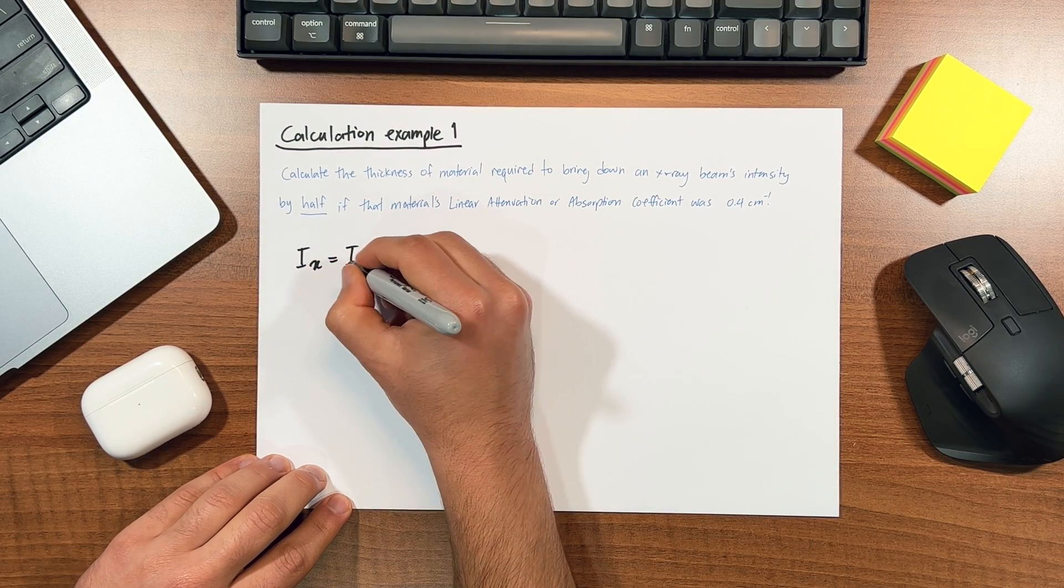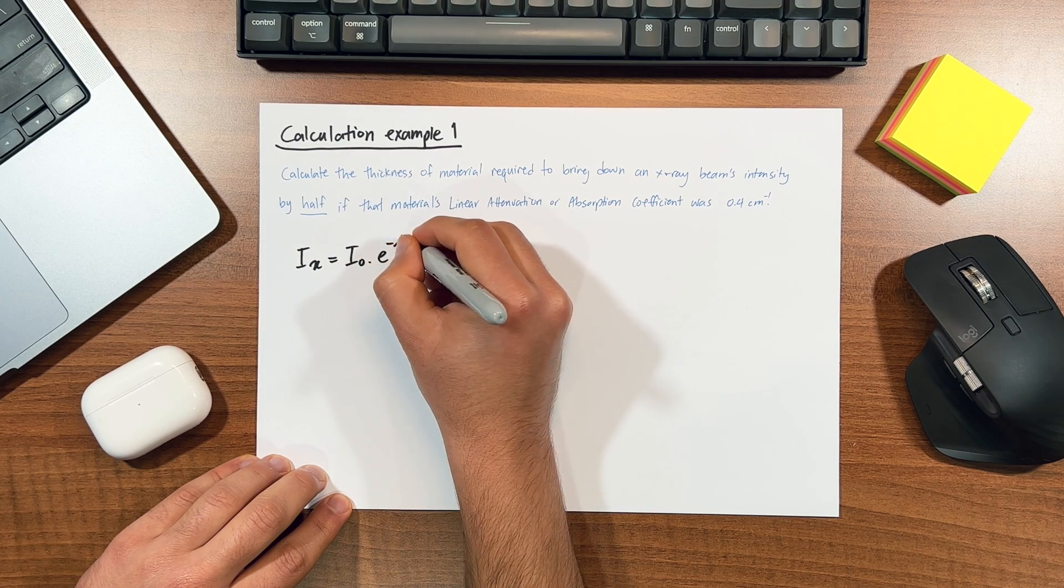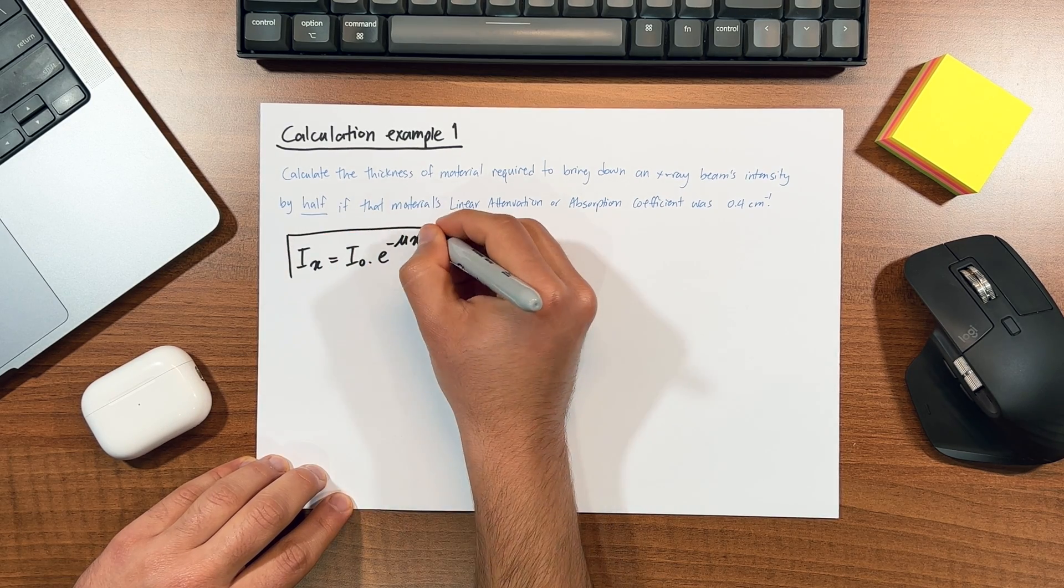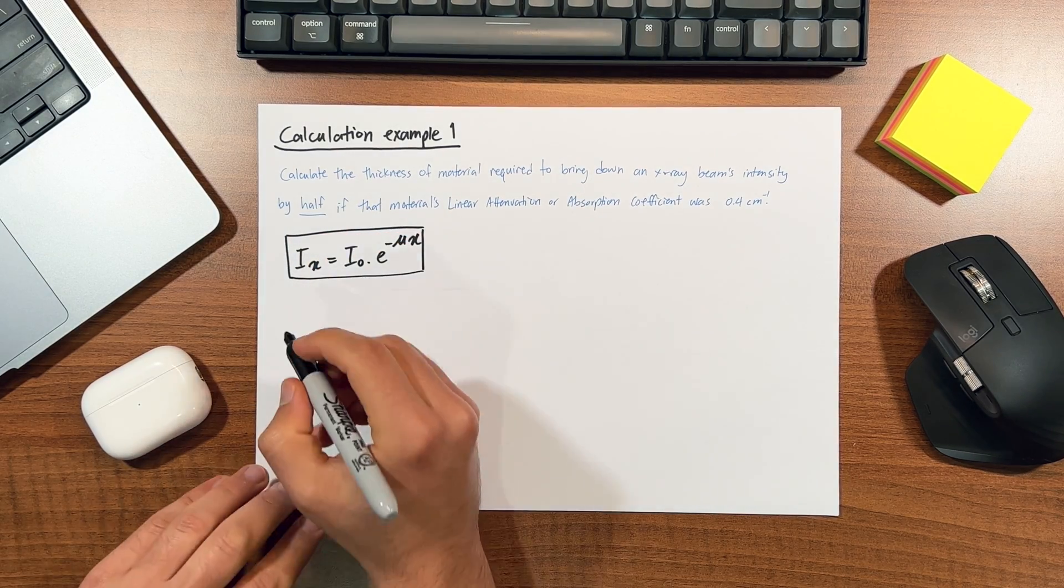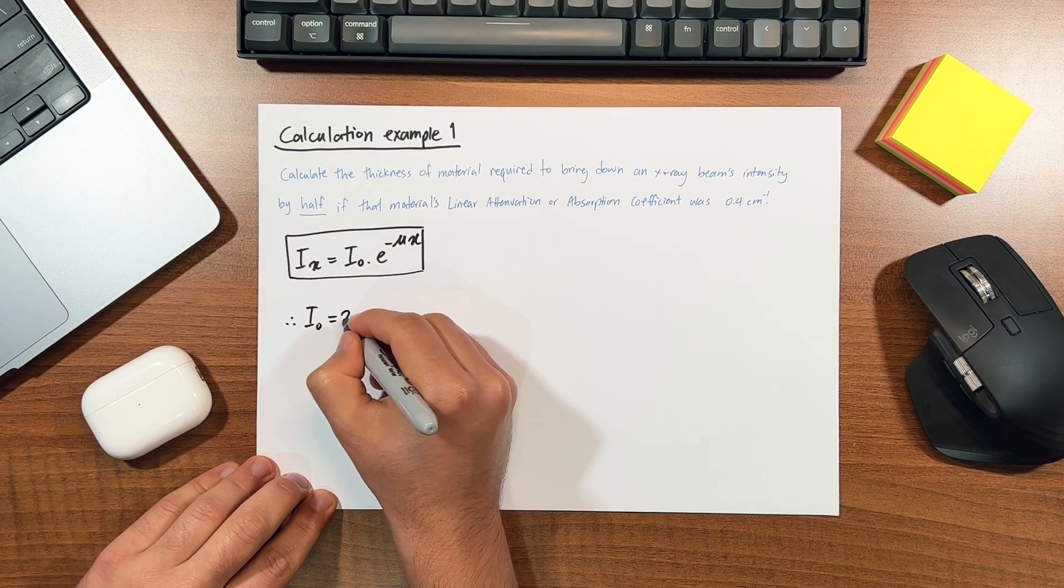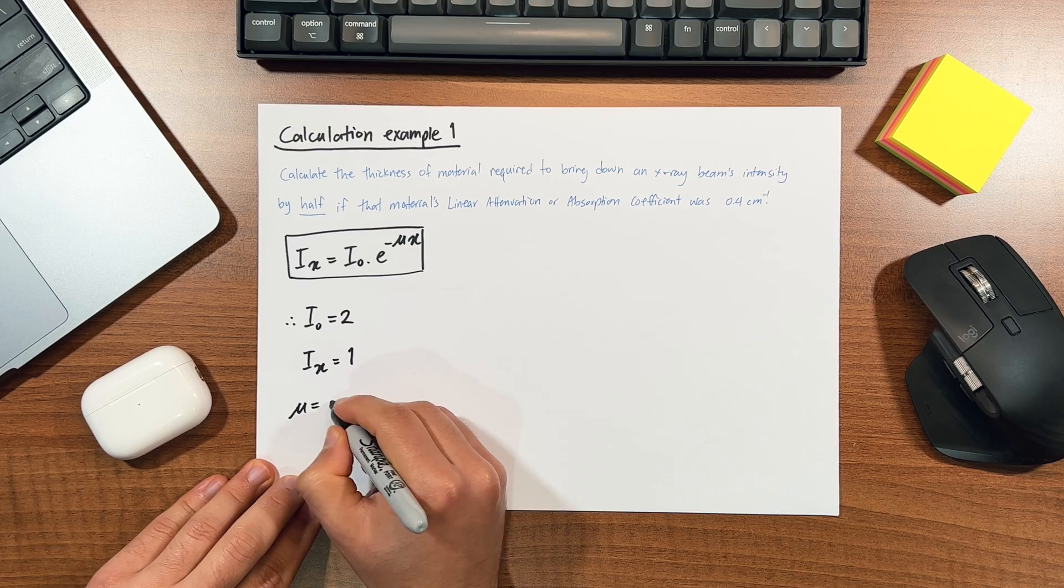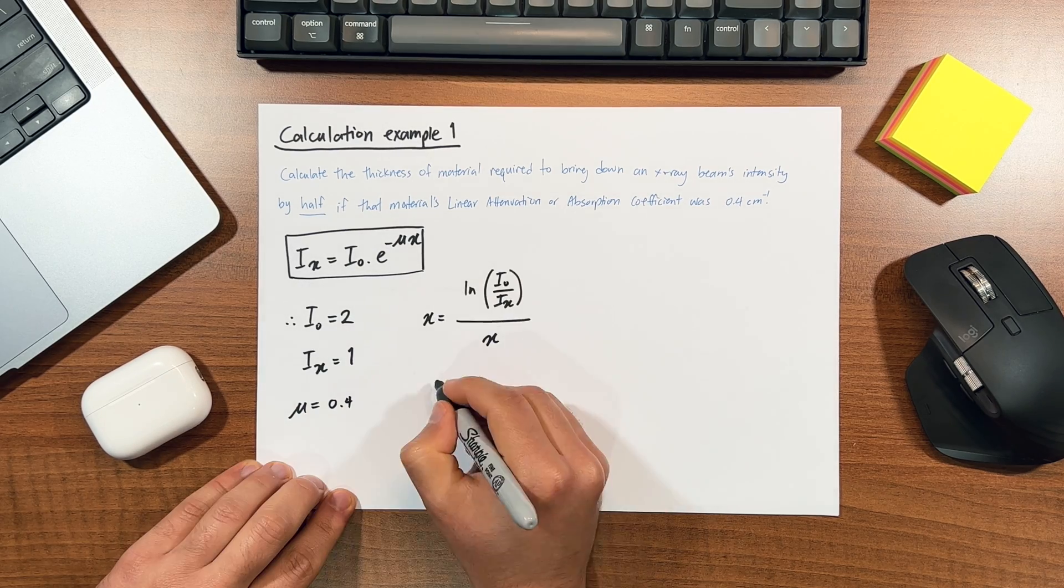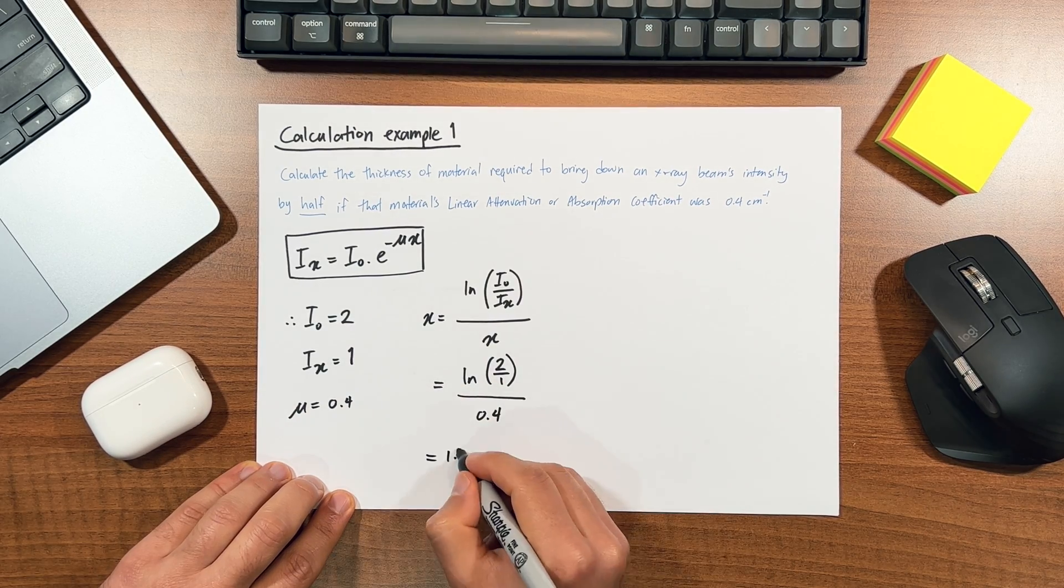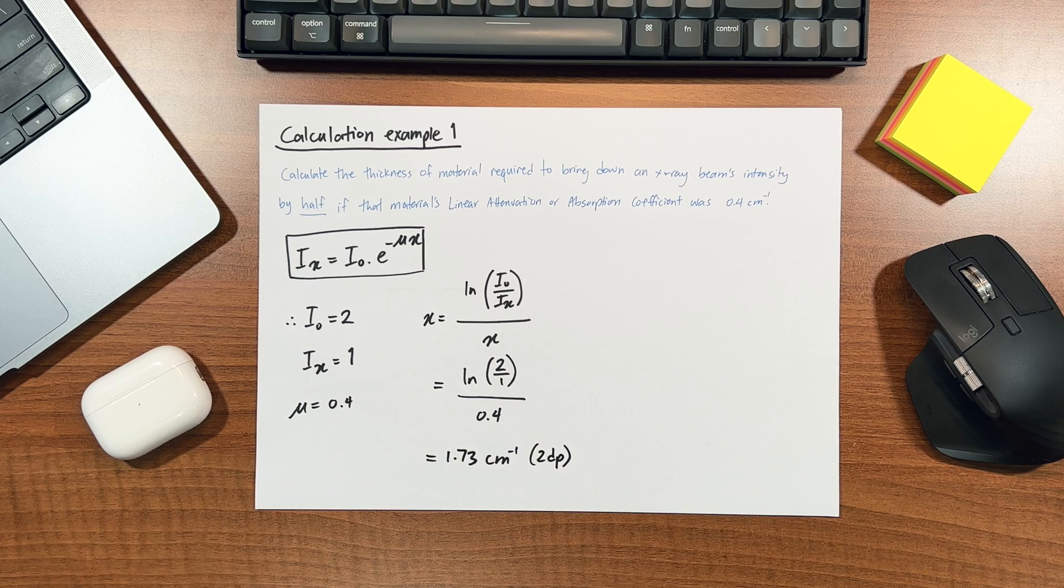Alright, now let me show you. So we just bring out our equation that we were working on before and I'm going to start substituting numbers. First of all, the question told us that the intensity came down by half of its original value, so I can say I0 is 2 and Ix is 1. Easy. Then I said that the attenuation coefficient of this mystery material is 0.4, so that'll be the mu. Pop that in the calculator and we get 1.73 centimeters. That's because the coefficient was in centimeters to minus 1. If the question said 0.4 meters to minus 1, then x would be 1.73 meters. Got it? The units are meant to cancel out. Excellent.